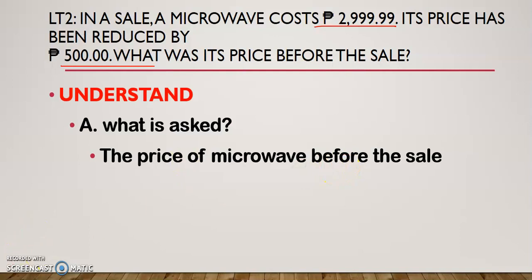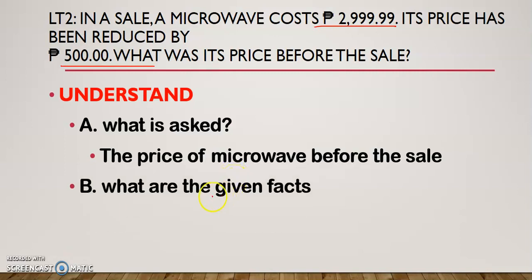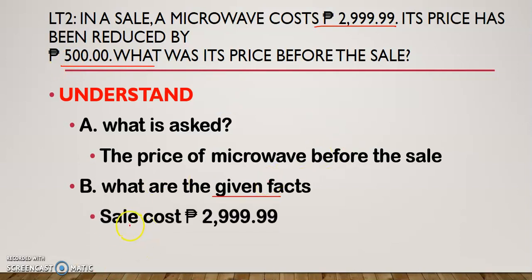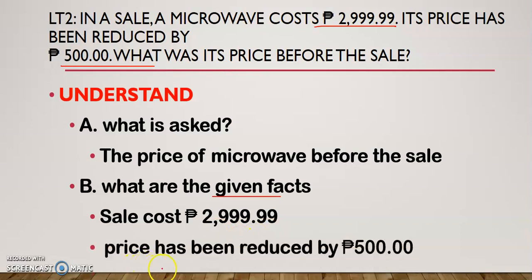Once you know what is asked, you have to write what are the given facts. This would be easy if you have already underlined the important details because usually the important details are also the given facts. So the given facts are that the sale cost of a microwave is 2,999.99 and that the price has been reduced by 500 pesos.